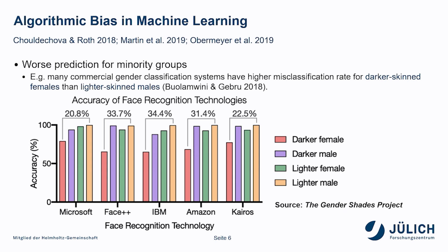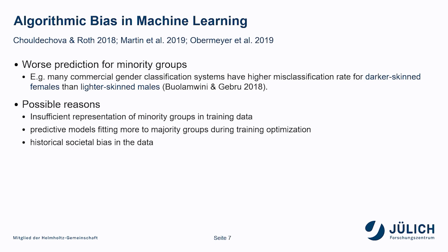Imagine such a system applied to detect suspects — a worse prediction accuracy in darker-skinned females would lead to a higher possibility of identifying the wrong suspect from this group, which is a severe societal risk. The reasons for such bias could be that there wasn't enough data from the minority group for the model to learn, that during model optimization the model fits better to the majority groups, or that the model learned from data reflecting previous societal or historical discrimination.